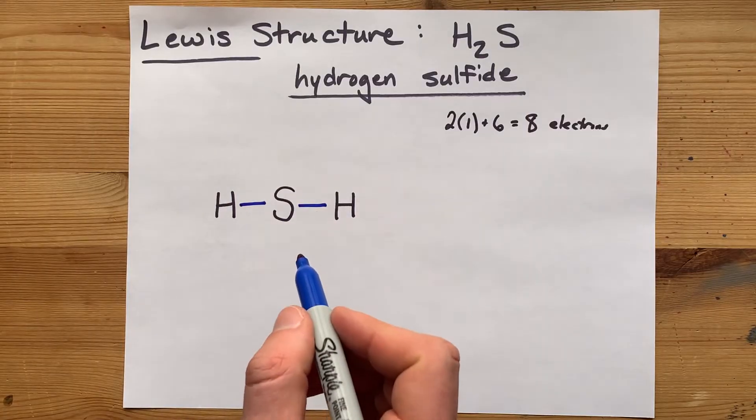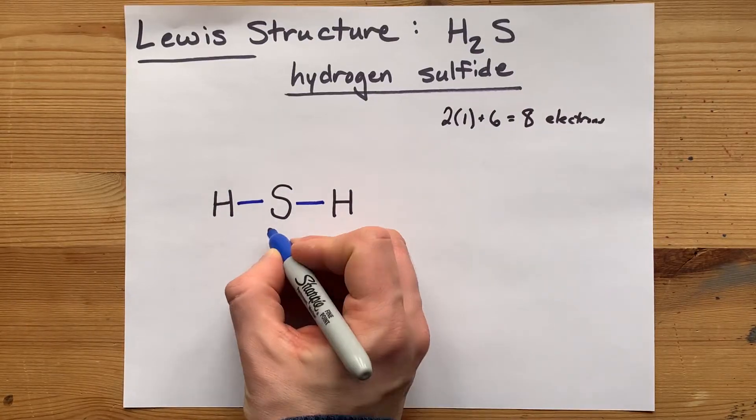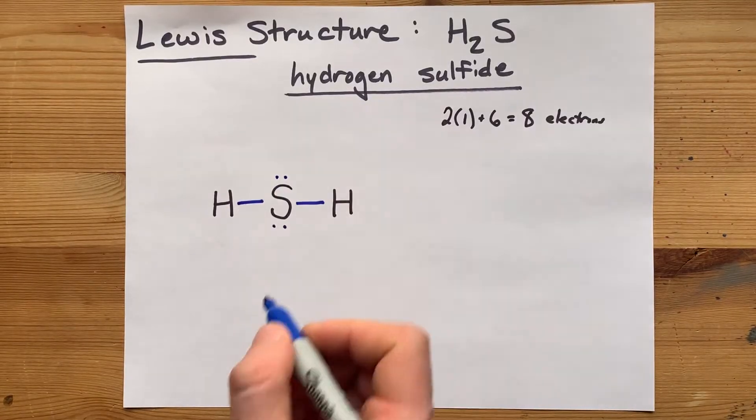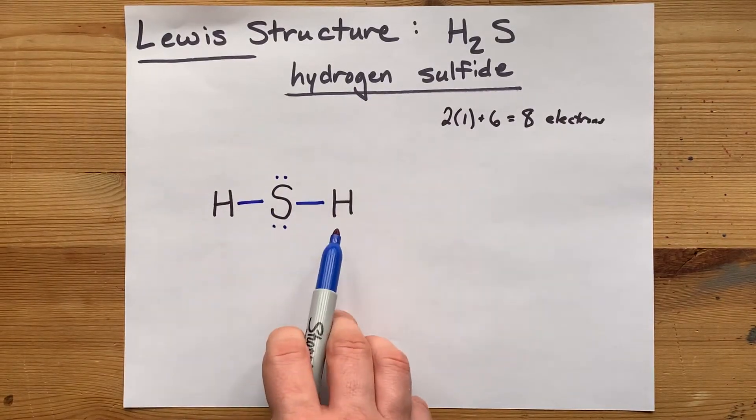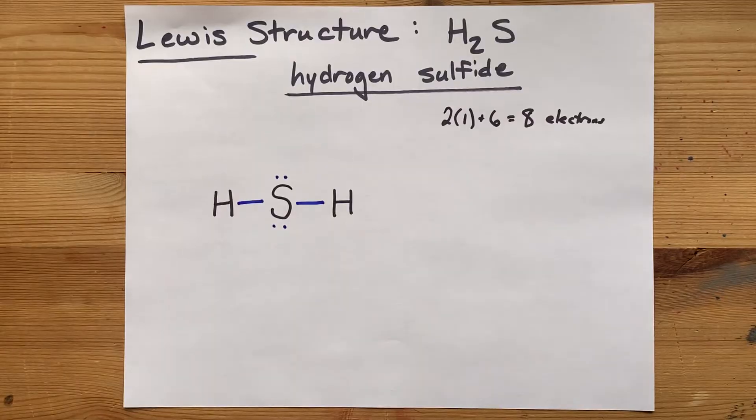Four electrons accounted for, I need eight total, so five, six, seven, eight. And now this sulfur actually does have a full octet like it wants.